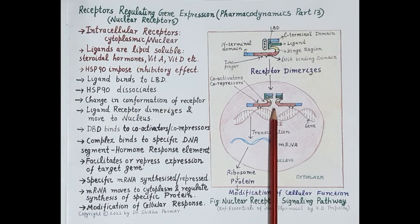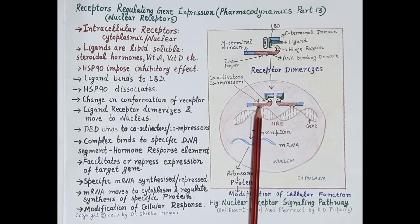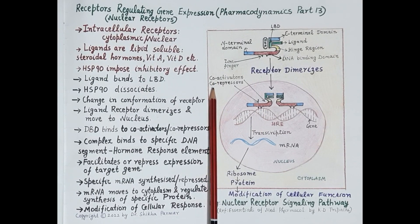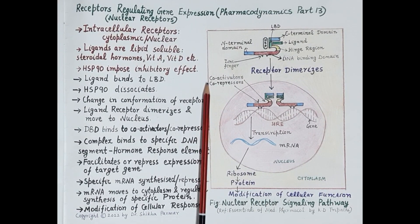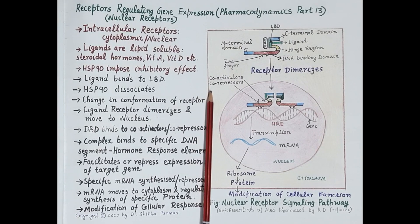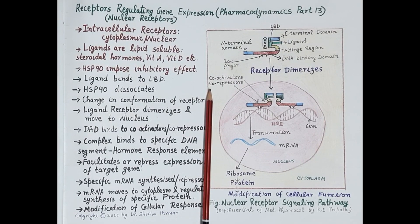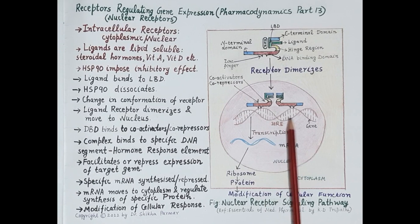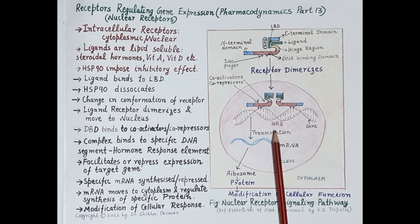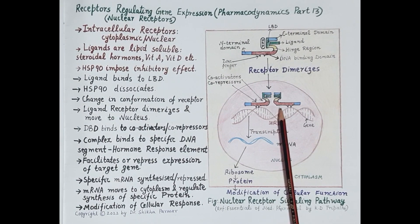In the nucleus, the ligand-receptor dimer is present. The DNA binding domain binds to co-activators or co-repressors, which alter the process of transcription. Transcription is the process by which messenger RNA is produced from the DNA. Co-activators increase the rate of transcription of genes, while co-repressors inhibit transcription of genes. This complex then binds to a specific sequence of DNA termed as hormone response element (HRE).